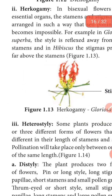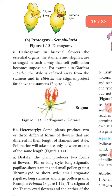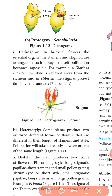The next is heterostyly. In some plants, two or three different kinds of flowers are produced based on the length of the style and stamen. This is heterostyly. Some plants produce two or three different forms of flowers with various lengths of stamen and stigma. Example: distylly — in this type of plant, two types of flowers are produced: one is the pin flower and the other is the thrum flower. Pin means long style.